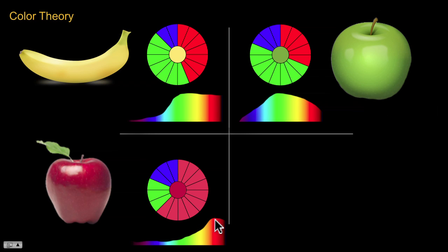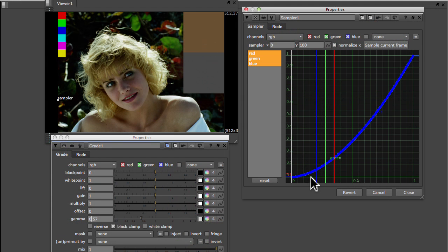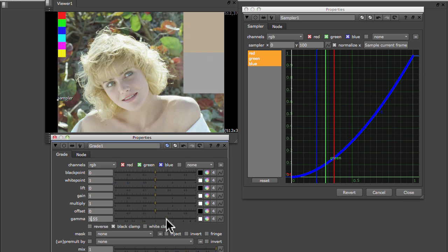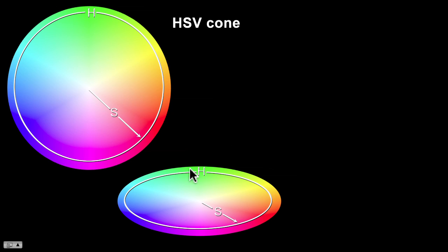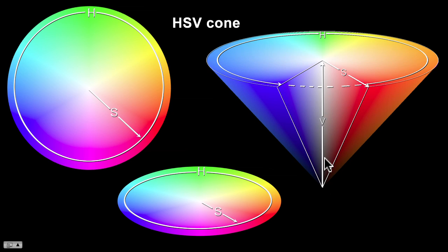The webinar starts out with a clear explanation of color theory, both additive and subtractive, then builds on that to add key color terms and essential concepts in color grading and secondary color correction. There are demonstrations and examples using a variety of programs including Photoshop, Nuke, and Shake to illustrate key color concepts. We will learn why RGB is for computers and HSV is for humans, then learn key color concepts like tints, shades, warm versus cool, and the dynamic range of images.